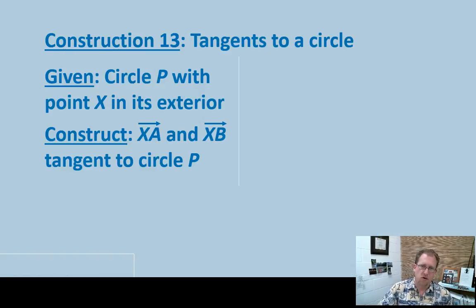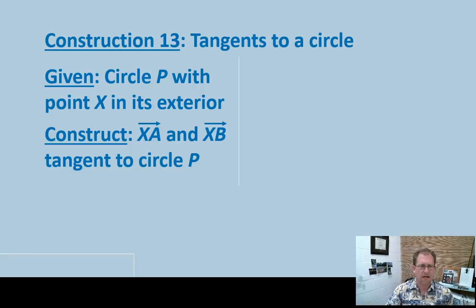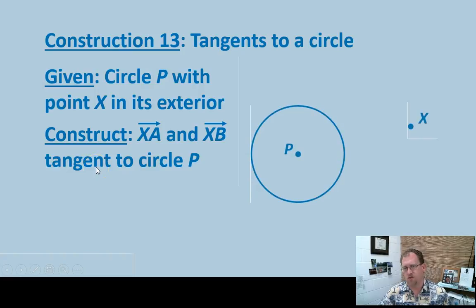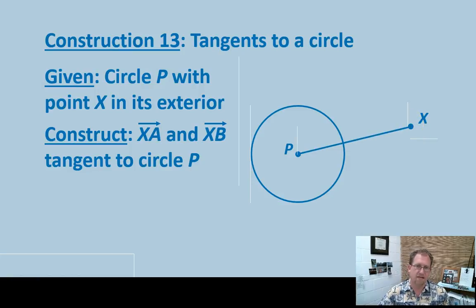This section has a construction in it. In Construction 13 — how to construct tangents to a circle — we're given circle P and point X somewhere outside of it. We want to construct two tangent lines. We begin with points P and X and draw a segment connecting them. This is not a tangent because this line, if extended, would intersect the circle twice. It's just a straight line from the center to the identified point.